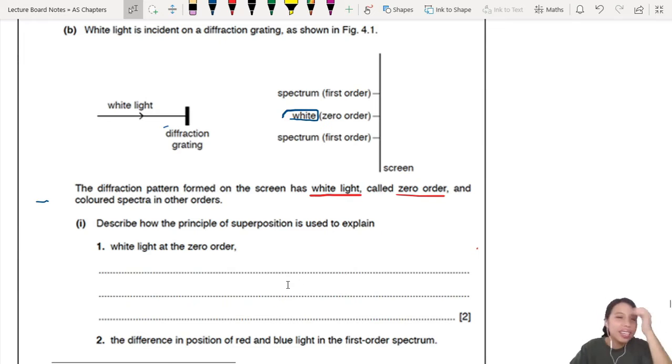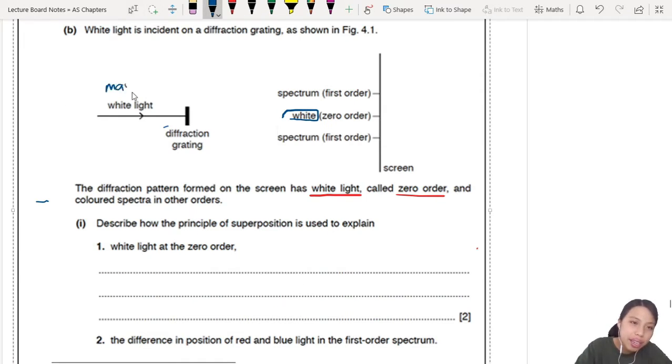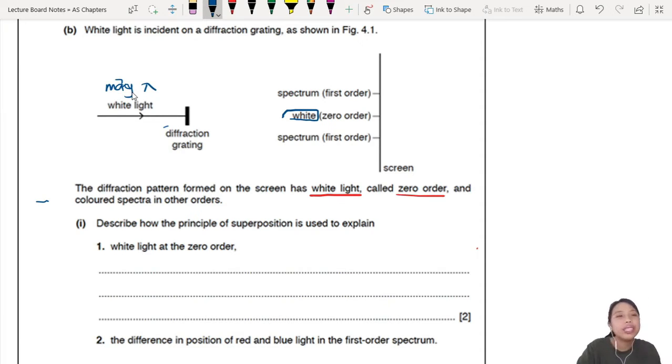White light, this white light here coming in, has many wavelengths inside there. White light is what? Red, orange, yellow, blue, green, all combined. But then only when it comes to zero order, you will still see white light right here. But the other orders, different already.